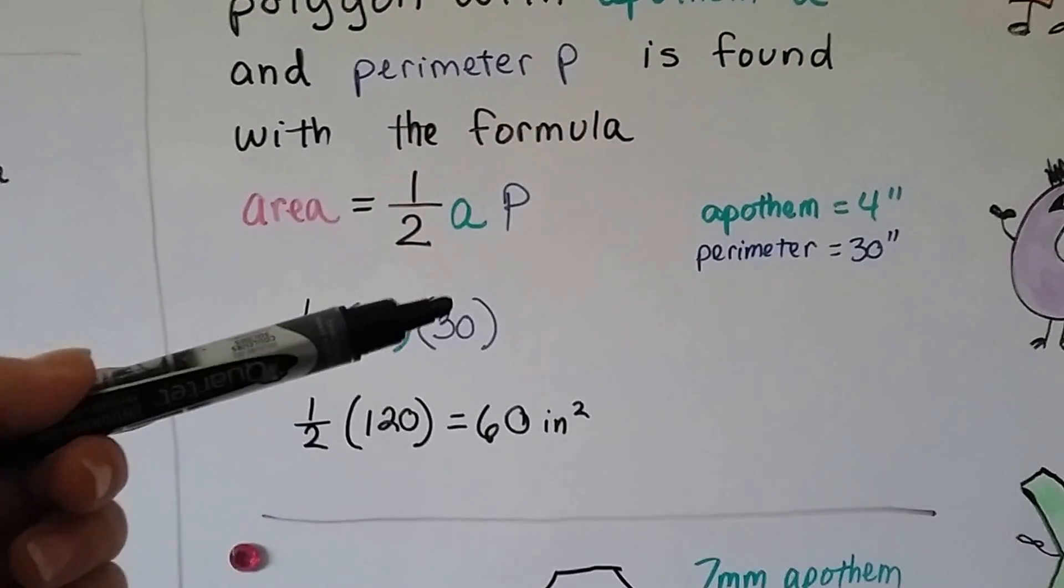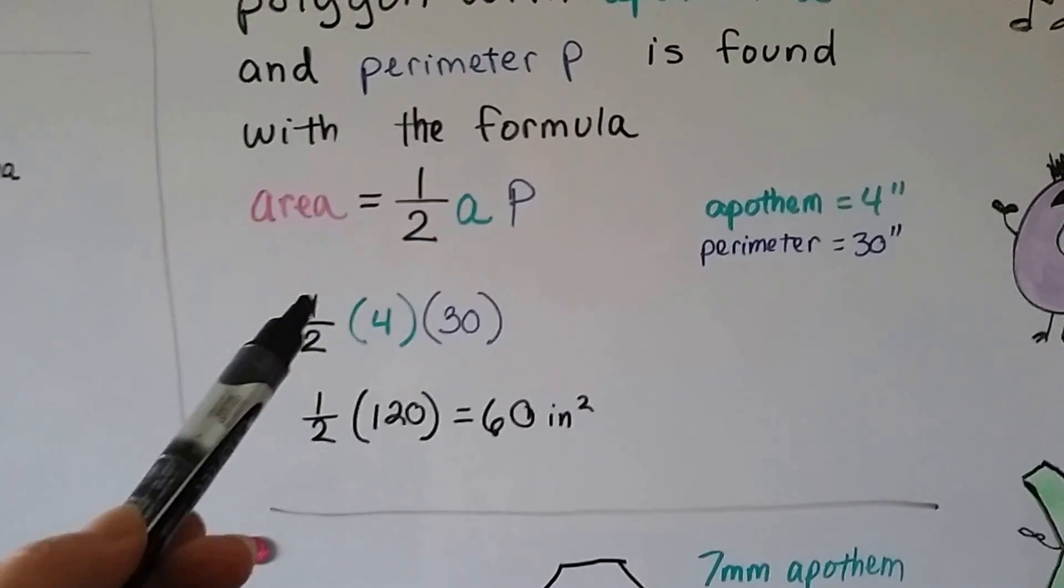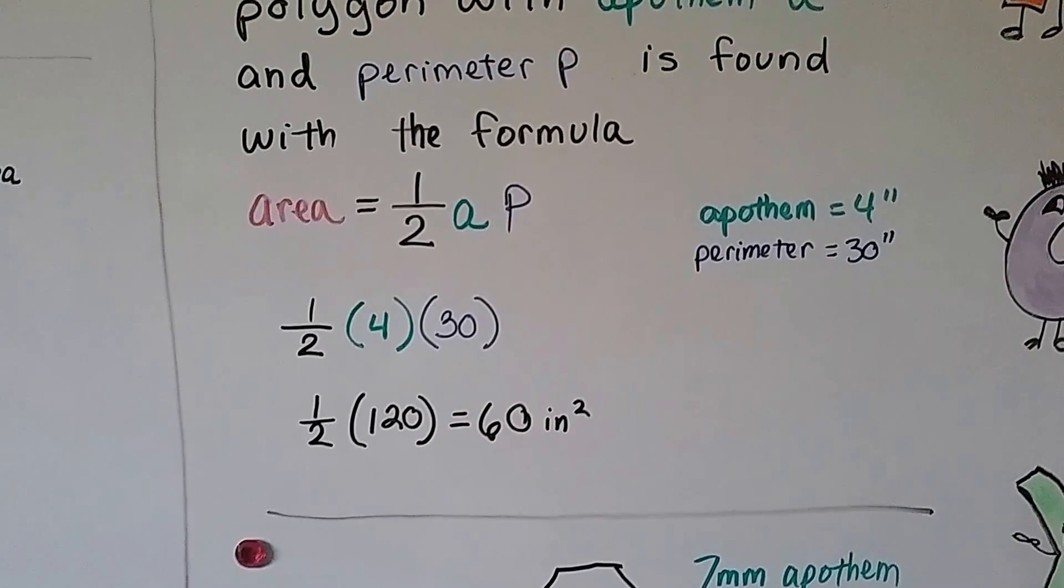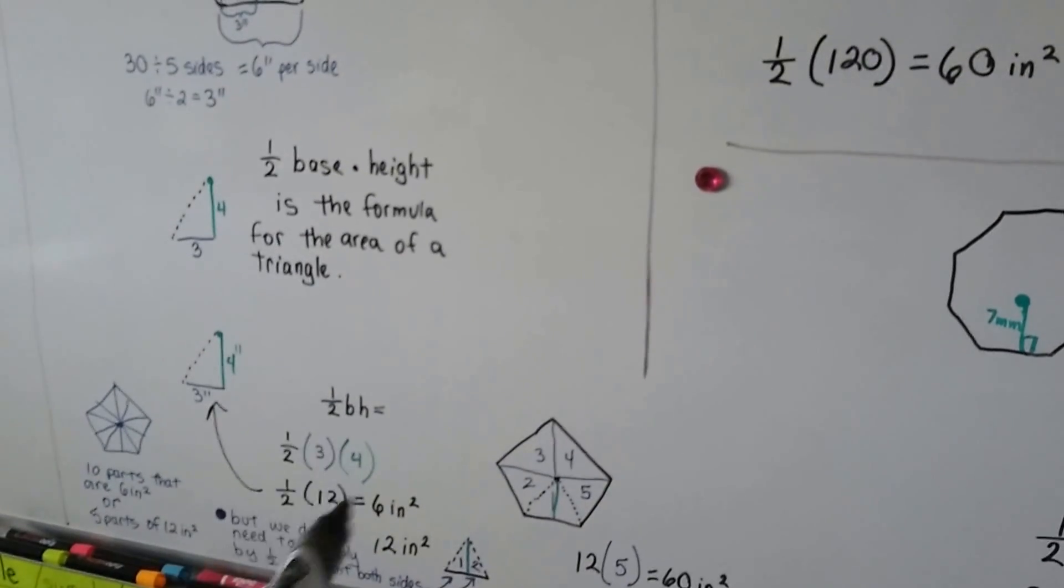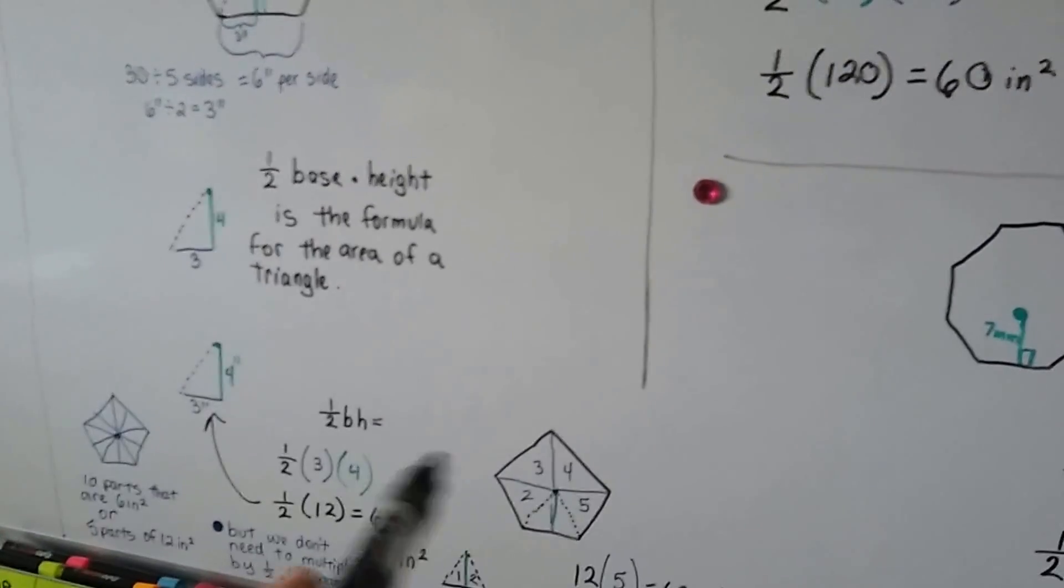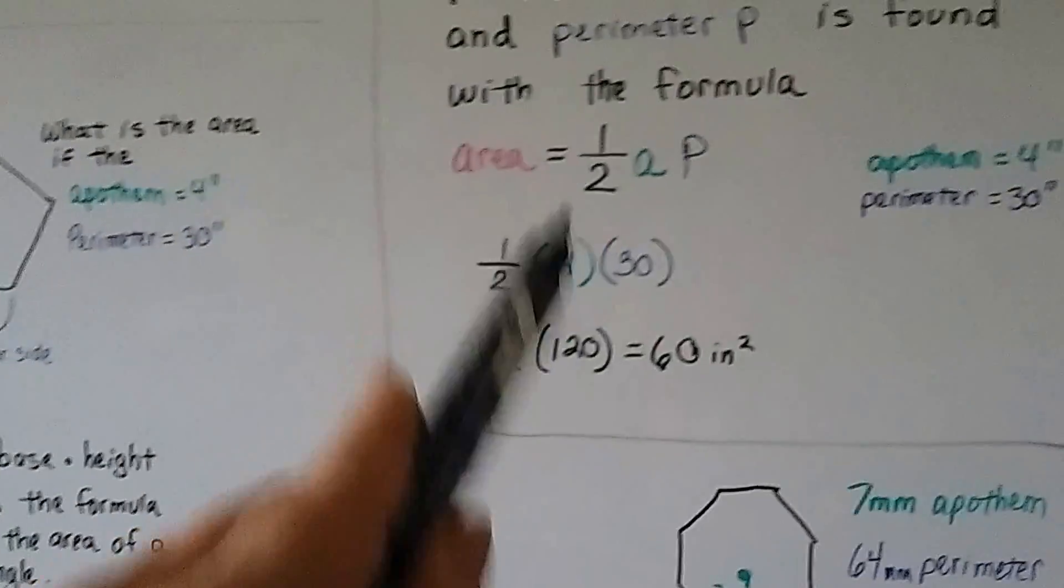But remember, it's got to be a regular polygon. We'll get 120, we multiply it by a half, and we get our 60 square inches. That's much quicker than going through this and then having to multiply it by how many little triangles there are in there. This is more direct, isn't it?